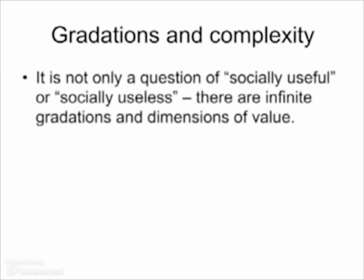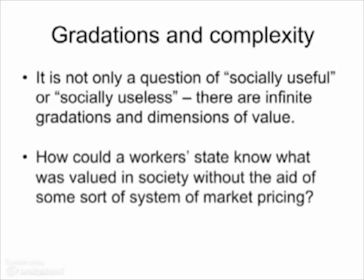It's not simply a matter of socially useful or socially useless. There's a whole infinite gradation — from very useful, very desired products that people are willing to pay a lot of money for and all of the labor time put into them, down to that cheap beer that you're only willing to pay a very small amount for. There's so much complexity in between that the willingness to pay at all different price levels is able to reflect, and that a planned economy would struggle with. How could the planners know how much people valued all these different products without the aid of some kind of market pricing?